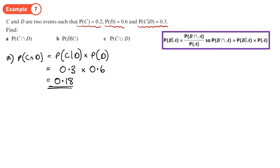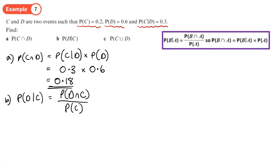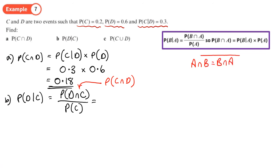So we now have the overlap. For part B, the probability of D given C equals P(D∩C) divided by P(C). You might panic and think you don't know P(D∩C), but D and C is the same as C and D — it's the overlap, and the overlap is the same whichever way you put the letters. So A∩B always equals B∩A.